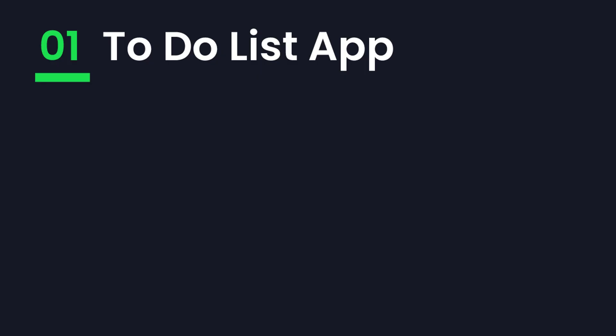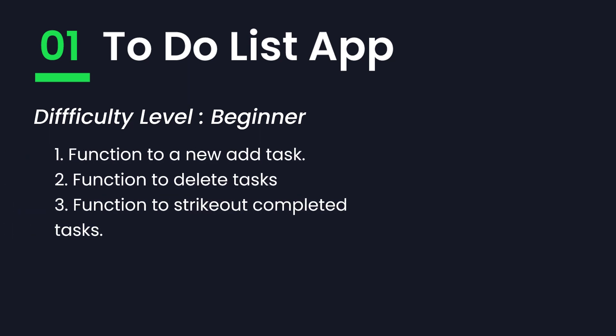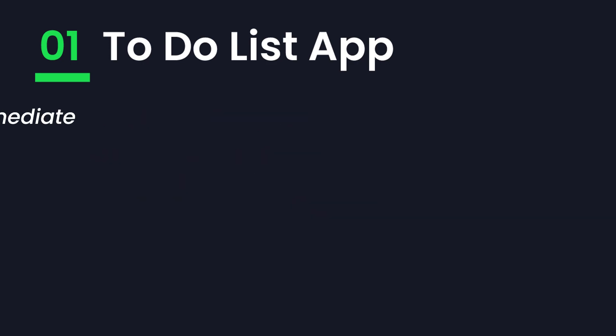The first project on this list is a to-do list app. In the beginner version of this project, you have to implement 3 functions: a function to add a new task, a function to delete a task, and a function to strike out a completed task.